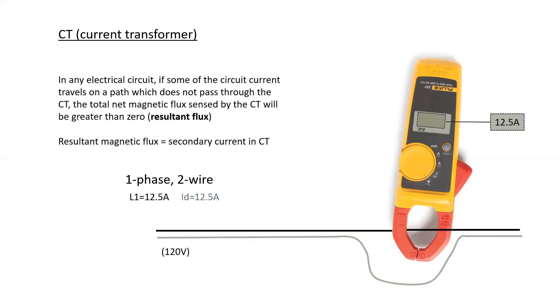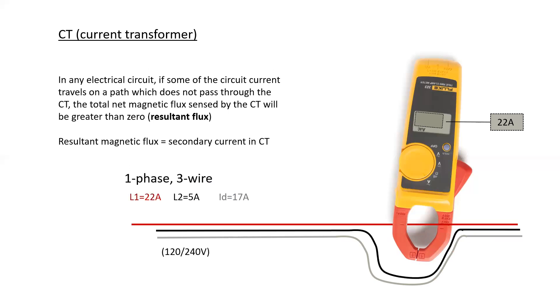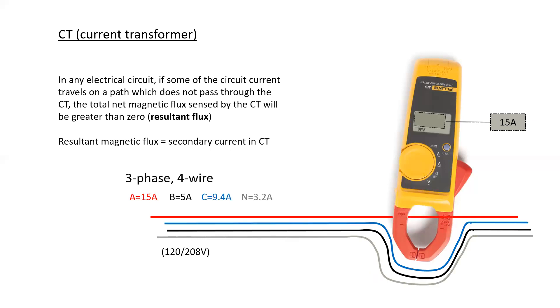Things change when we only have one conductor. And that's how we obviously utilize our clamp ammeters. If some of the circuit current travels on a path which does not pass through the CT, the total net magnetic flux sensed by the CT will be greater than zero. And so we'd call that as resultant flux.